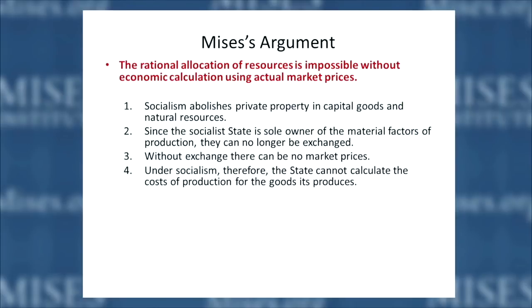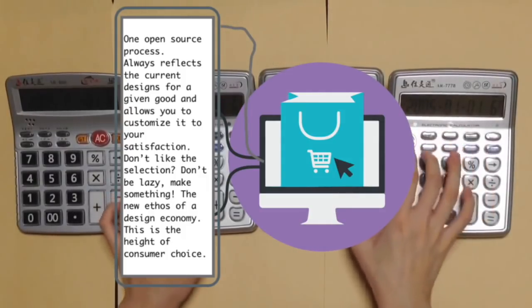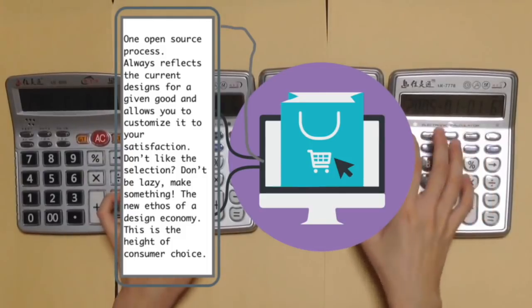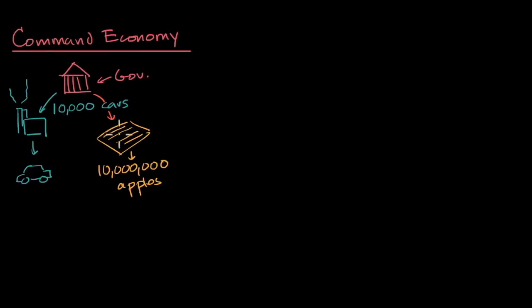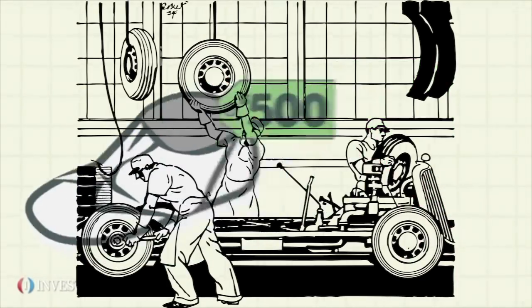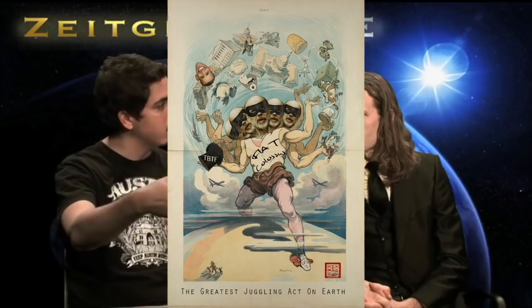Without market prices, how can the state calculate the cost of production? This brings us back to the calculation problem. When you have a medium of indirect exchange that you can place a monetary value on, which is brought to fruition through the price based on supply and demand, that goes back to the individual who is most apt and capable of deciding what would better his condition — not a technocrat, technician, or central planner.